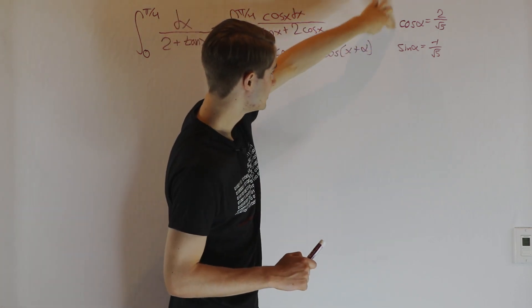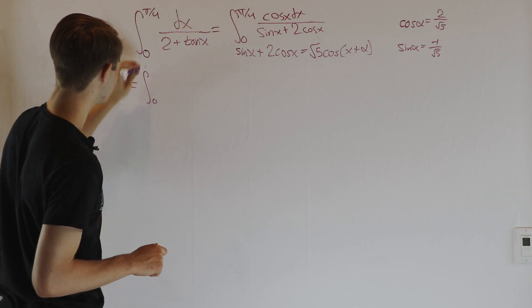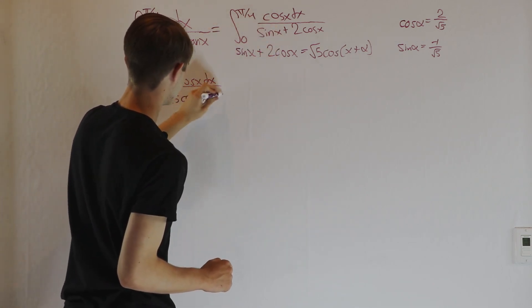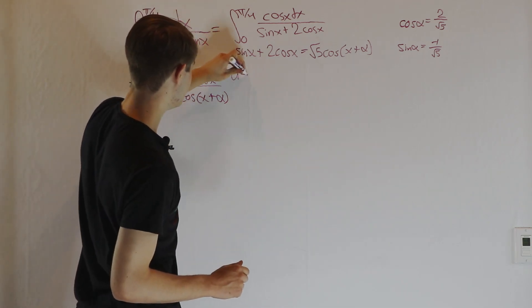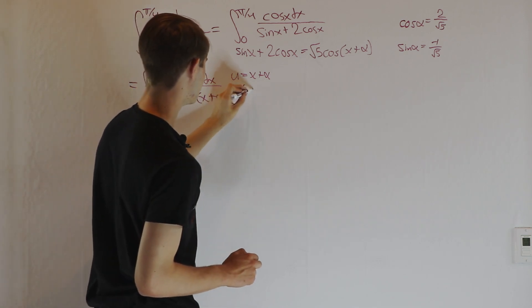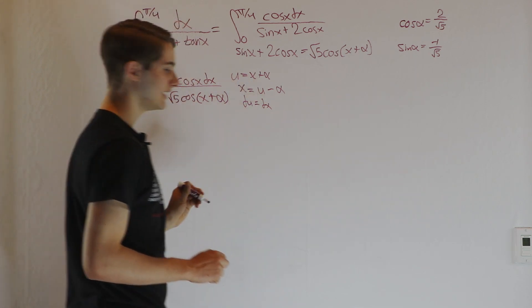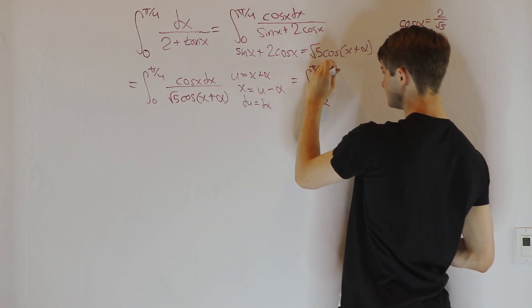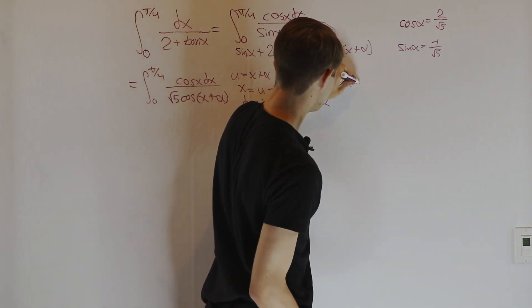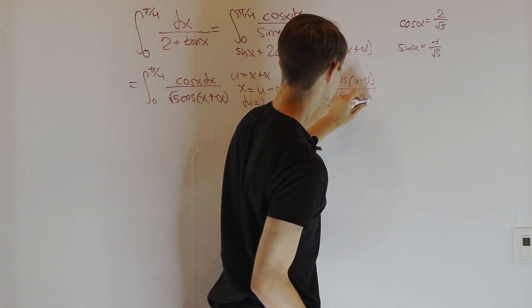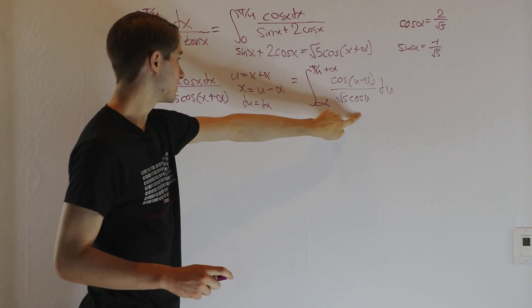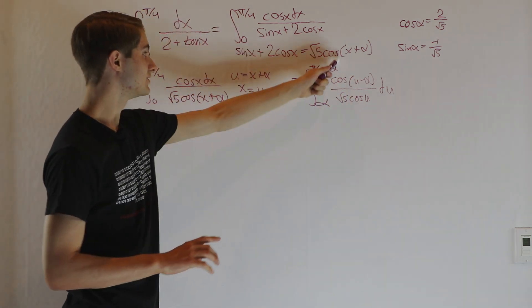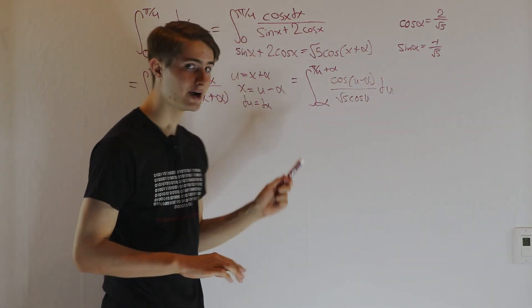We have our √5 and our information about α. Plugging into the integral, we get the integral from 0 to π/4 of cosine x dx over √5·cos(x + α). Now we substitute u = x + α, so x = u − α and du = dx. The bounds become α at the bottom and π/4 + α at the top, and the integrand becomes cos(u − α) over √5·cos(u) du. This lets us split the numerator instead of the denominator using the cosine addition formula.